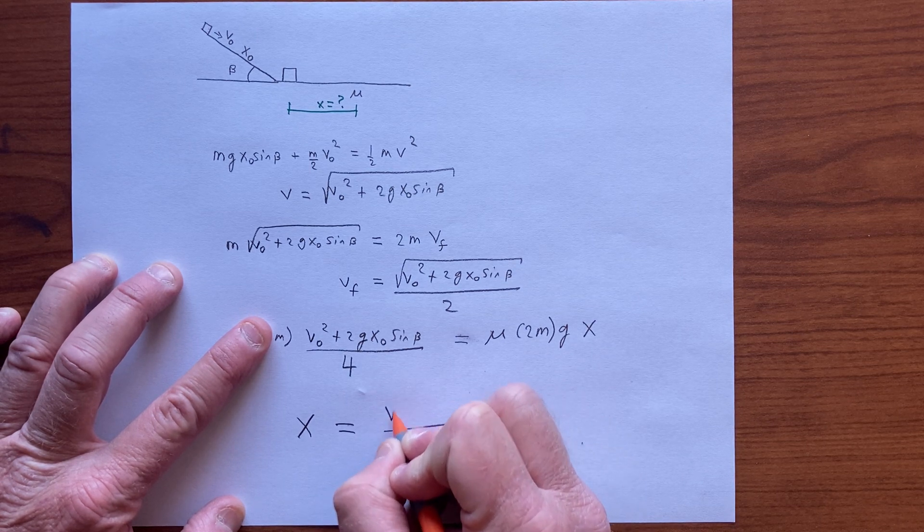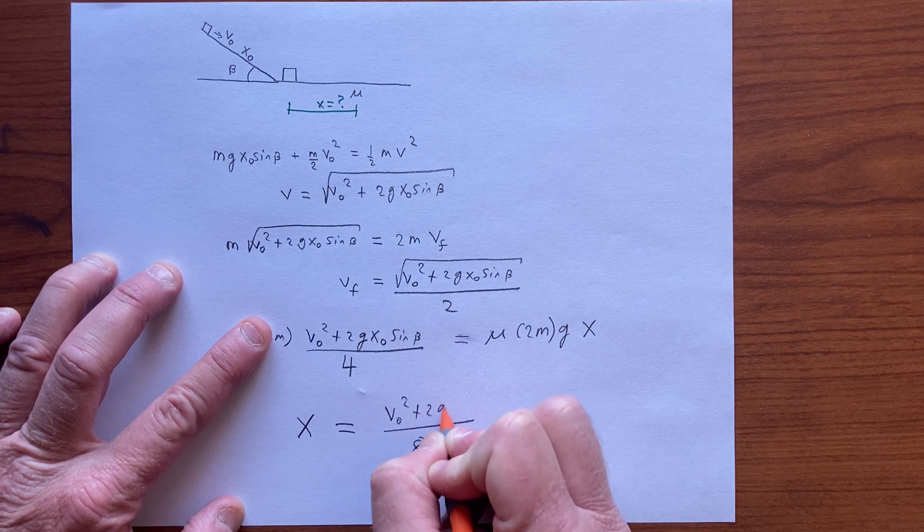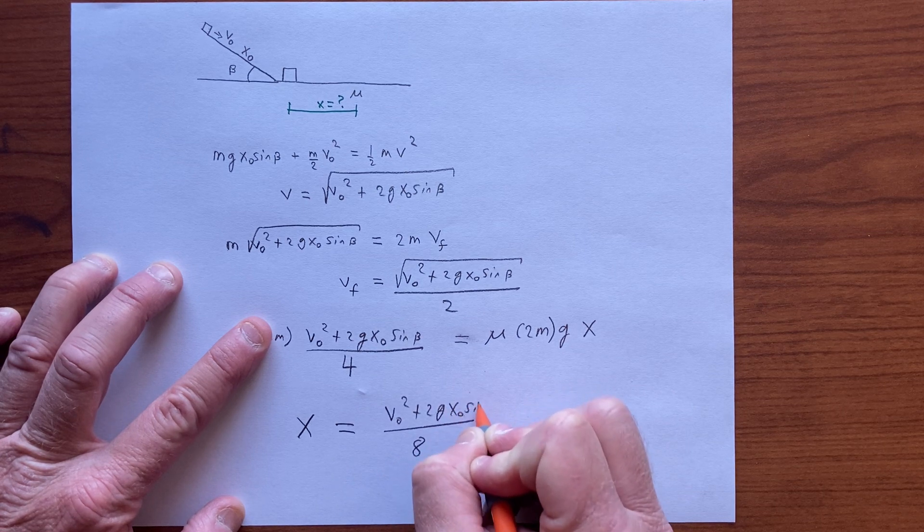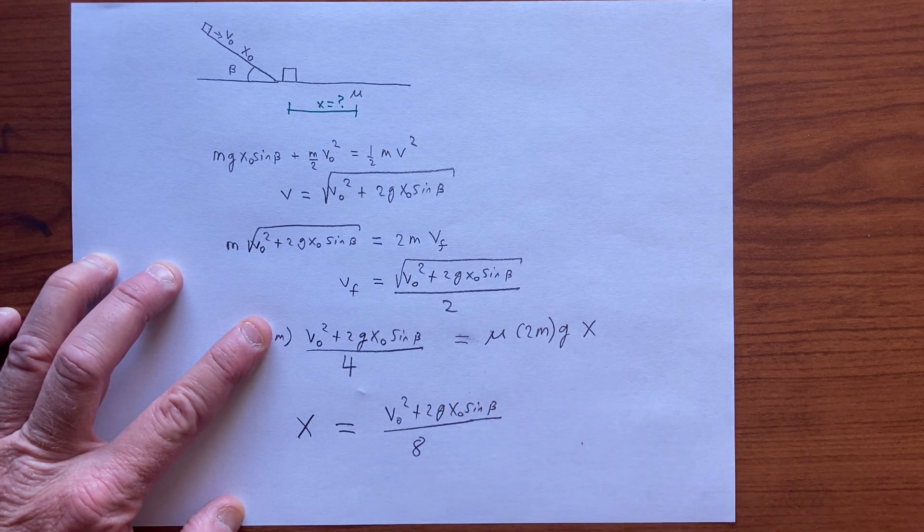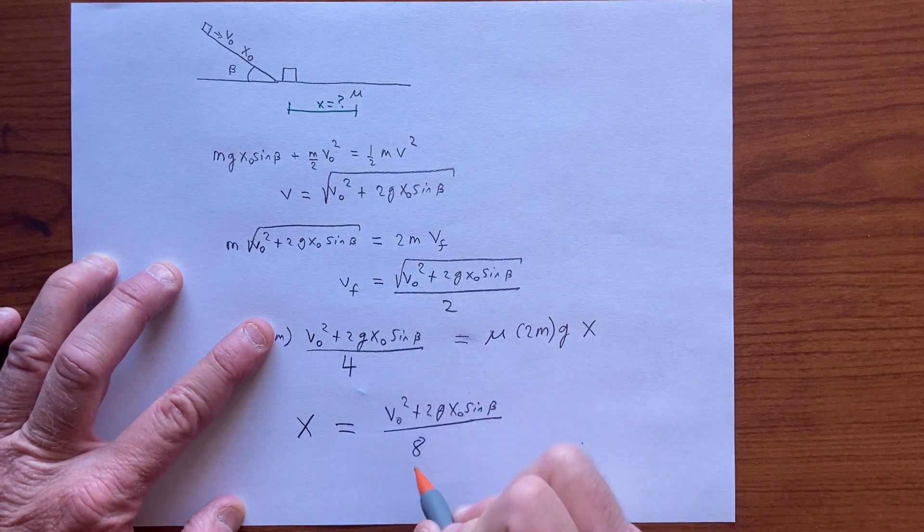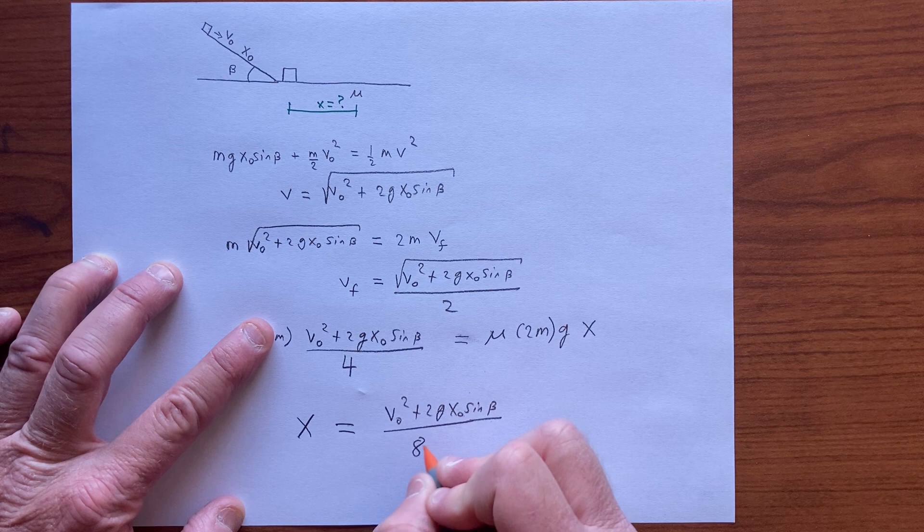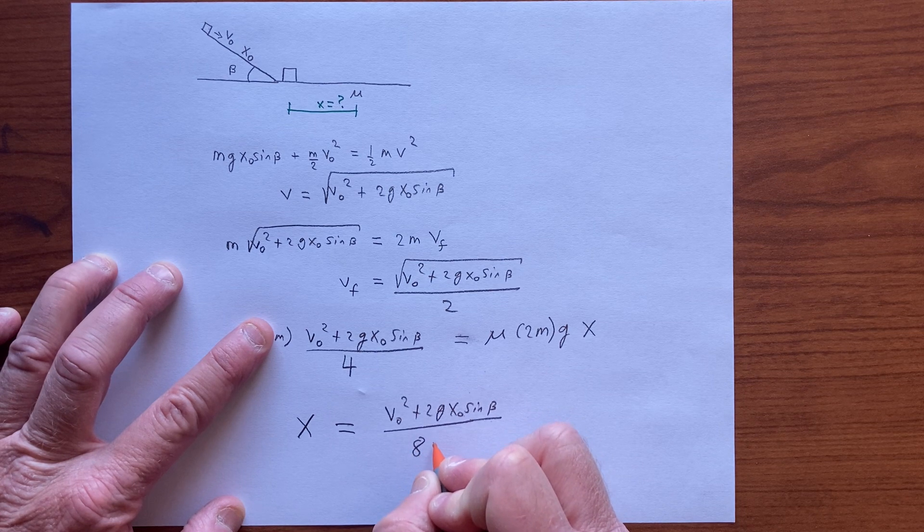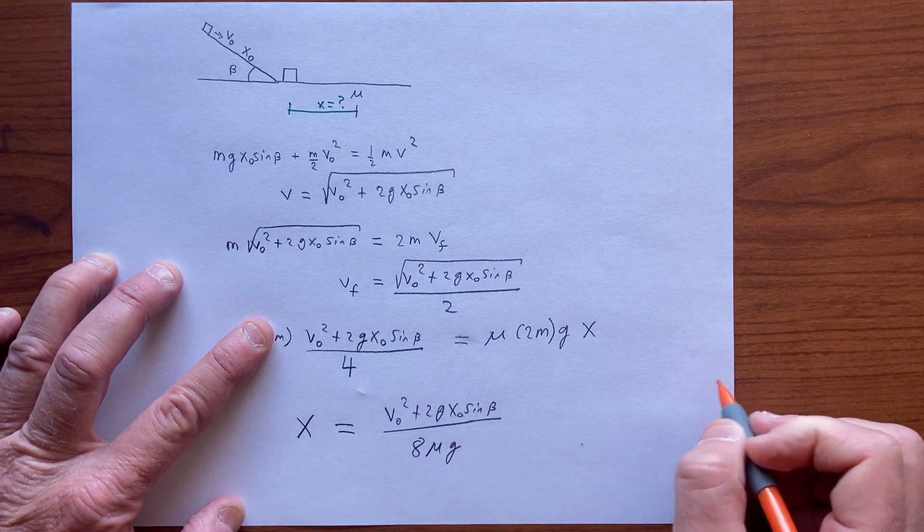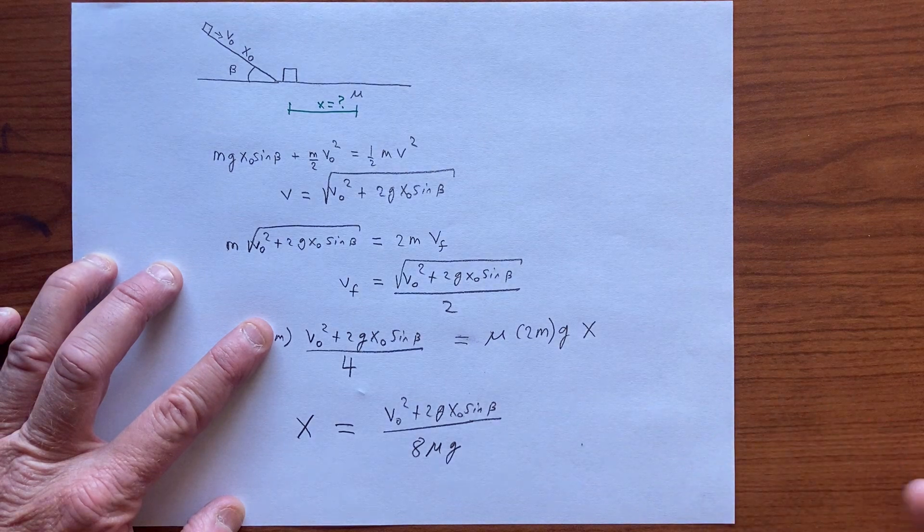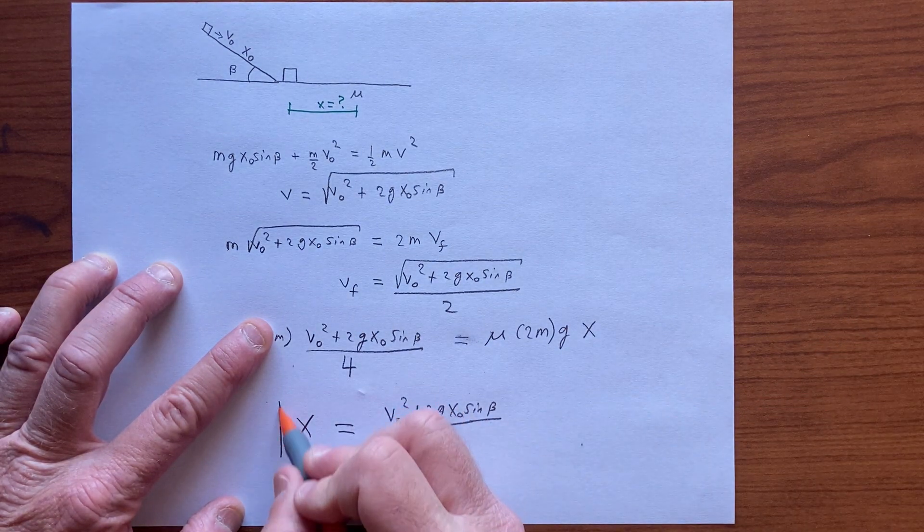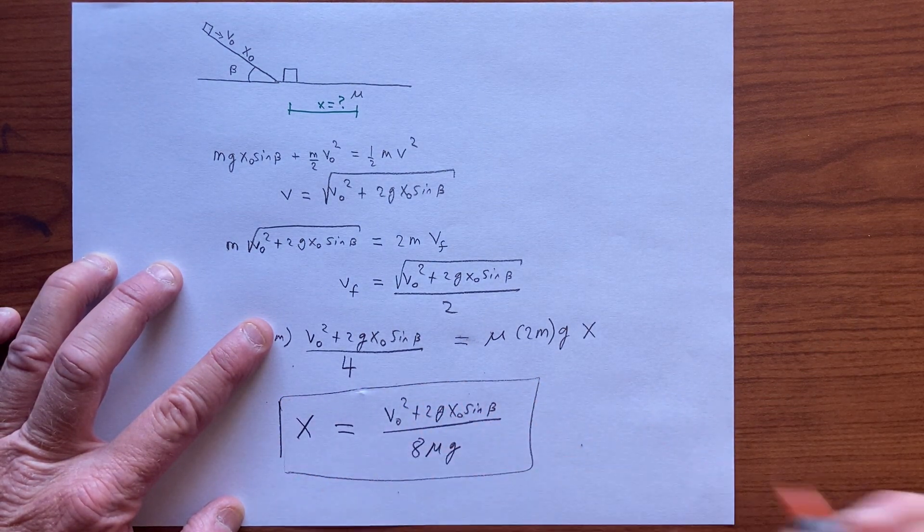So we have v-naught squared plus 2g x-naught sine of beta. If I did that right, we'll divide it by 2, we get a factor of 8. I still have g and mu, so it's 8 mu g, and that should be the distance the object travels on the horizontal surface.